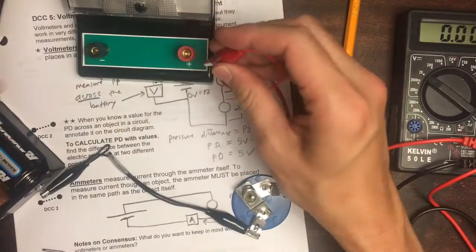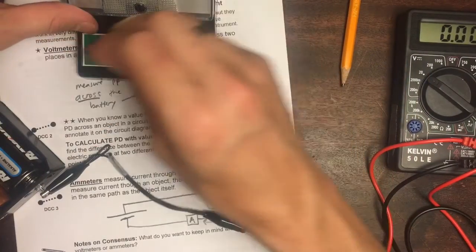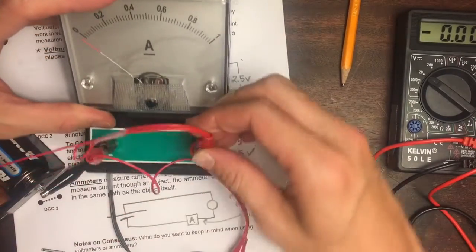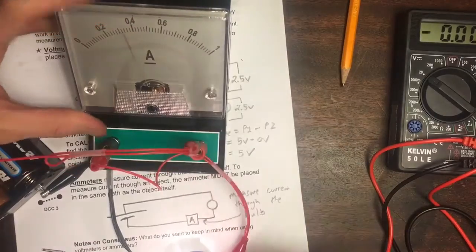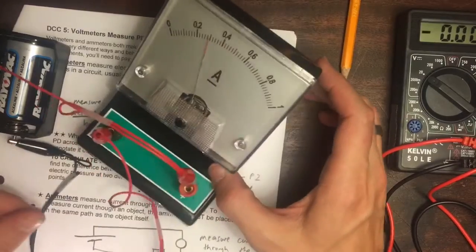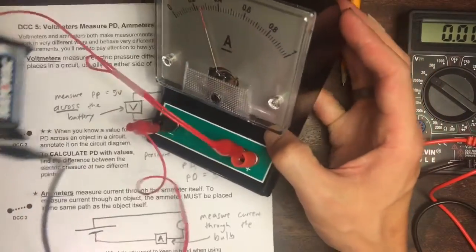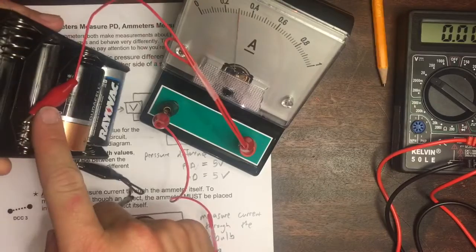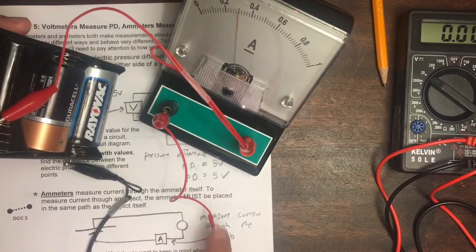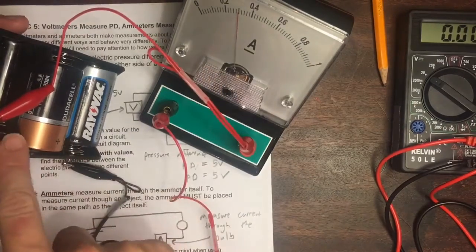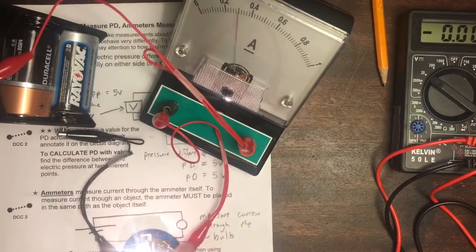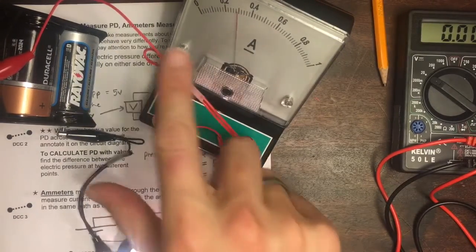So if we actually want to make a measurement on this ammeter of the current through the bulb, we need to connect the wires in such a way that the current actually goes through the ammeter. You can't see this all that well, but this is saying the current leaves the battery, goes through the bulb, through the ammeter, and then back to the battery. The loop in the path includes the bulb and the ammeter both.